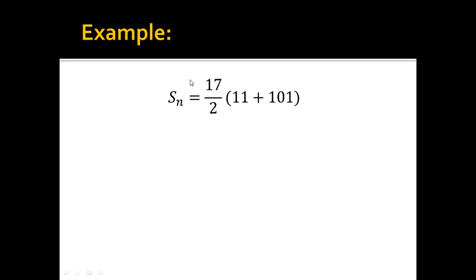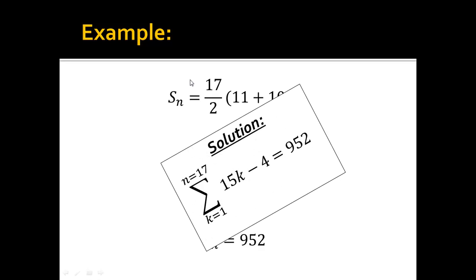So, I'm going to go ahead and perform the arithmetic on this. I do order of operations in this. I like to do the 11 plus the 101 first, 112. I go ahead and do the division at that point in time, because really I'm just dividing it by 2. And then multiplying it by 17, I get 17 times 56, 952. So, this summation from 1 to 17 of 15k minus 4 is 952. And, in other words, what I could be saying here is the first 17 terms add up to 952.